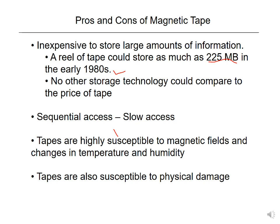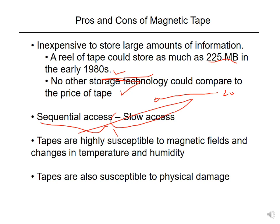From the start, magnetic tape has had low cost. However, it uses sequential access, so it is slow — for example, going from location 0 to 200 means traversing 0, 1, 2, 3, 4 in order. It is also susceptible to humidity and temperature changes, which can disturb these devices, and it is susceptible to physical damage, making it not highly reliable.